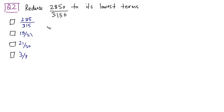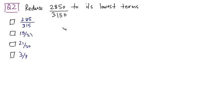Let's move on to question number 2: reduce this fraction to its lowest terms. Basically it is asking you the ratio between these two numbers. You know that any number can be expressed as a product of its prime factors, so express the numerator and the denominator as a product of their prime factors and hopefully you can cancel out terms.